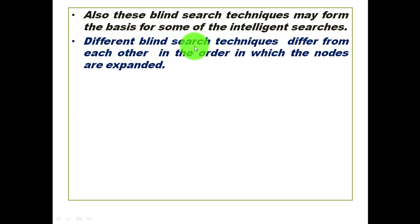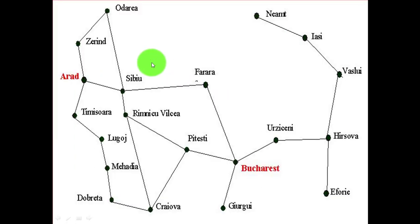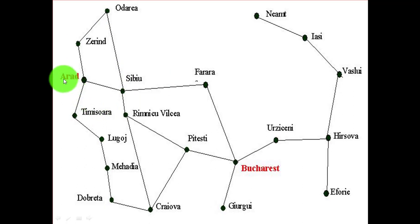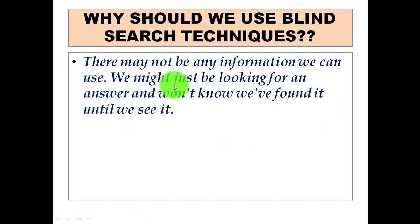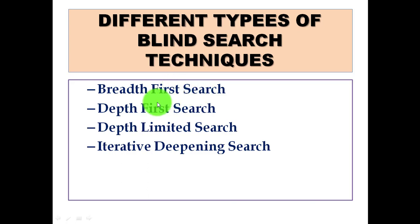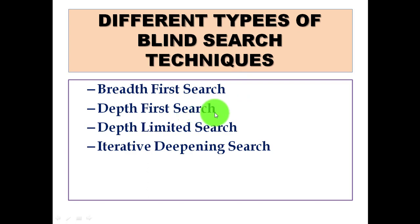Different blind search techniques differ from each other only in the order in which the nodes are expanded. As seen in the diagram, there is no particular preference to evaluate Sibiu, Zerind, or Timisoara first — so accordingly we have different blind search techniques based on the order of evaluation. The different blind search techniques include: breadth first search, depth first search, depth limited search, and iterative deepening search. Breadth first search and depth first search are the most popular ones, which will be covered in the coming lectures.